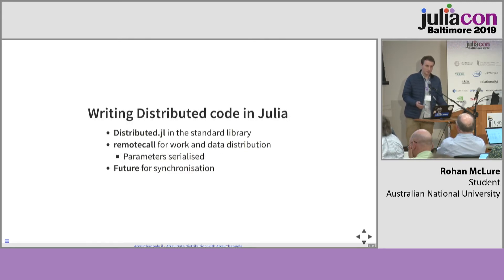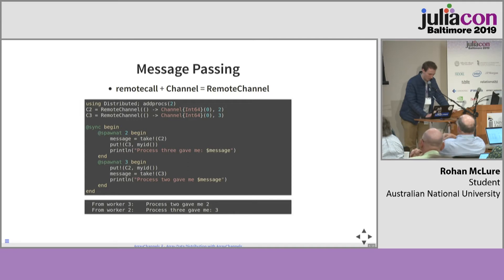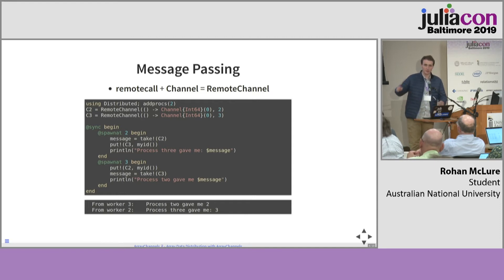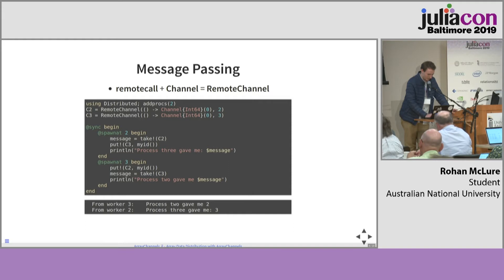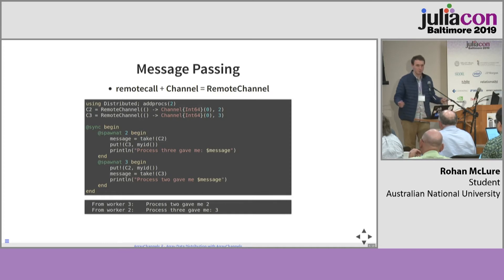How do we write normal distributed code in Julia? We have two constructs essentially: remote call for distributing work and data between our workers, but also futures for synchronizing and waiting for that computation to occur remotely. This is the standard way to write code involving communication between workers. From the master process, we establish remote channels — global references to channels which sit at a certain worker process. From here, we can delegate work to each of our workers. I'm just getting the workers to send each other their IDs. So process two will anticipate a message from its channel, which process three will provide. And the reverse happens on the next line. That's a synchronous put and take to remote channels.